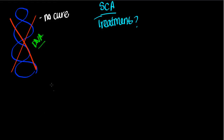When we're talking about treating sickle cell anemia, we're really talking about treating the symptoms — treating what happens as a result of these complications. Let's revisit and make a list of what we know is going to occur as a result of sickle cell anemia.